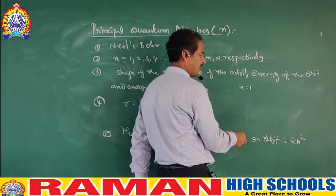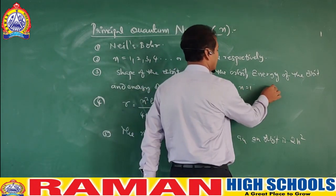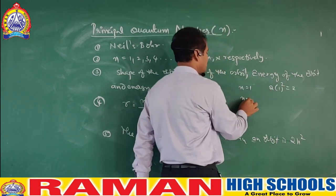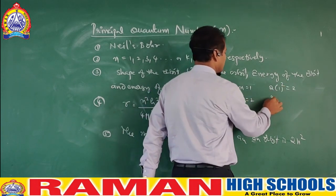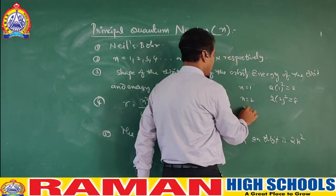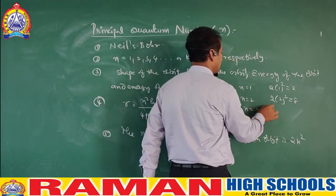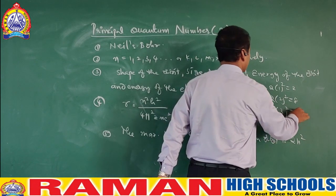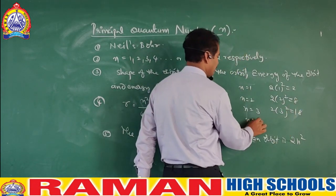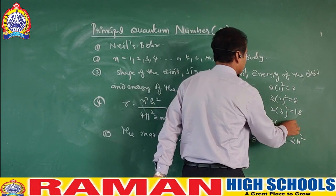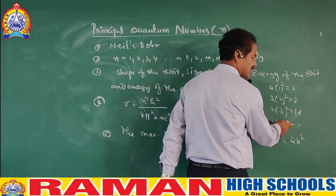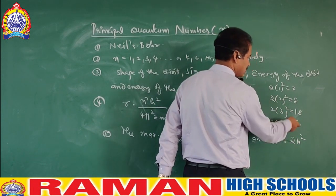If N is 1, the first orbit contains 2 electrons. If N is 2, the second orbit contains 8 electrons — 2 × 2² = 8. When N is 3, 2 × 3² = 18 electrons are present in the third orbit. When N is 4, 2 × 4² = 32 electrons.